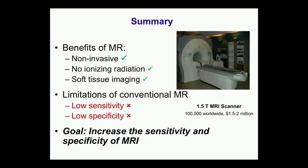MRI is a versatile technique — it's non-invasive, non-ionizing radiation, and very good for soft tissue imaging. But the two fundamental flaws are low sensitivity and low specificity. The goal of my lab research for the last 10 years — before I moved to MD Anderson, I was a professor of bioengineering at the University of Southern California — was to increase both the sensitivity and the specificity of MRI for live imaging on humans.